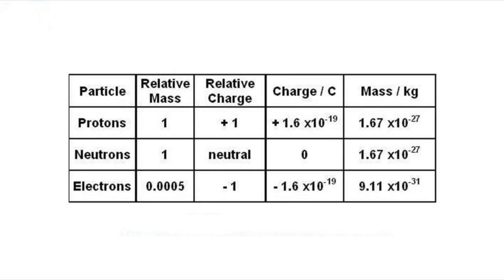The neutron was the fourth elementary particle to be discovered after the electron, proton and photon. It's 1,839 times more massive than the electron, and marginally more massive than the proton.